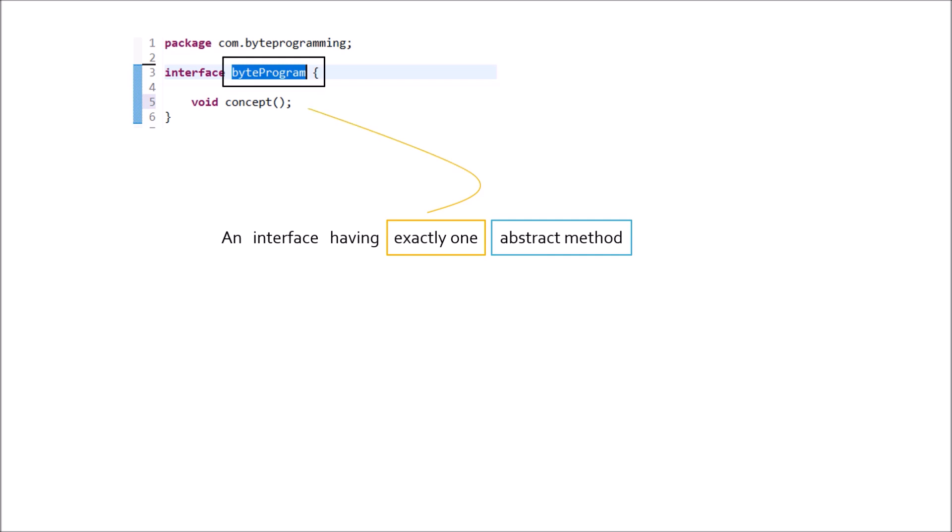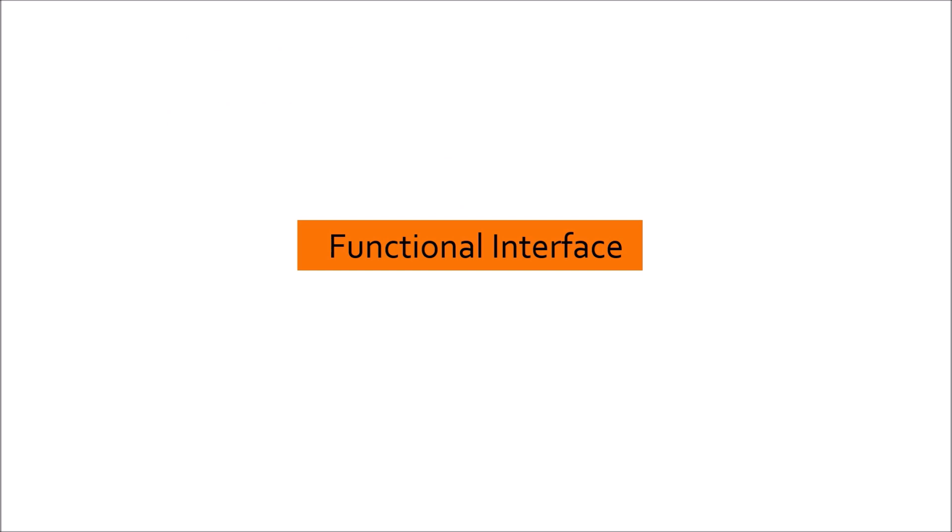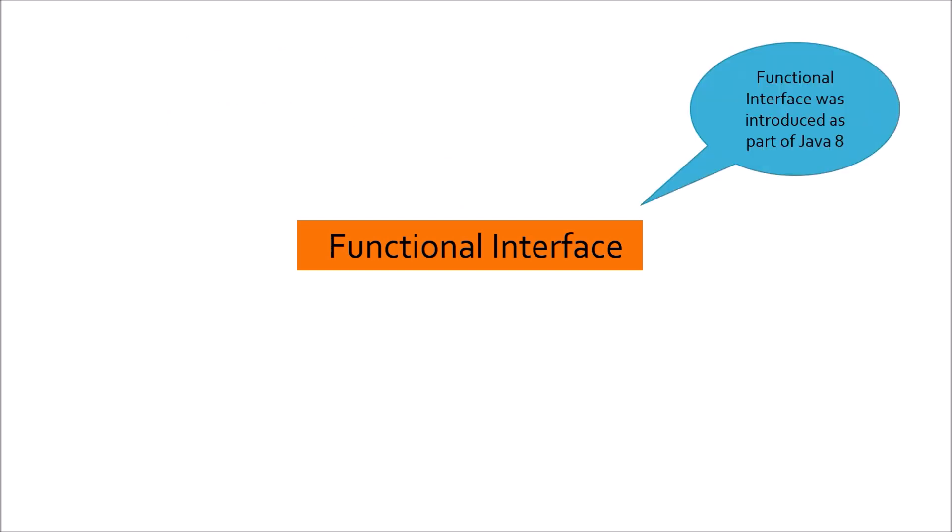Let's look at some misconceptions. First: functional interface was introduced as part of Java 8, meaning it's a new feature. This is completely wrong. Before Java 8, we already had Comparable, Comparator, and Runnable — they are functional interfaces too. In Java 8, new enhancements came, such as the @FunctionalInterface annotation and new functional interfaces like Predicate, Supplier, and Consumer.